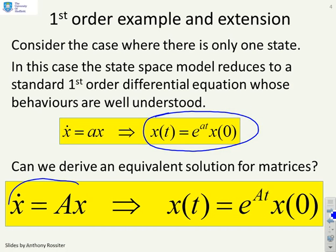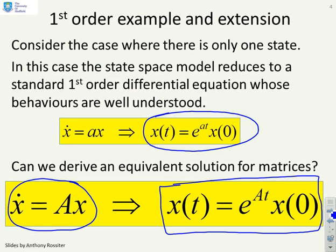So if we have x dot equals capital Ax, so x is now a vector, can we not write an analogous expression of this form? x of t equals e to the At x of zero. Well, the answer is that yes we can, but of course the puzzle is, what do we mean by e to the At? Because A is now a matrix. So we need to be clear on how we're defining this expression.